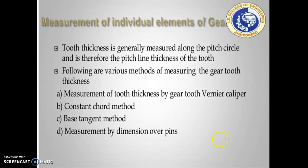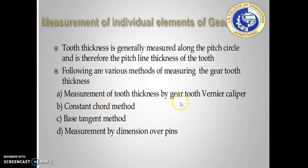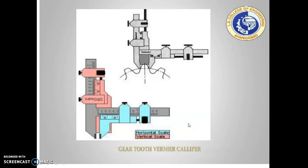Tooth thickness along the pitch circle — pitch line thickness of the tooth — can be measured by gear tooth vernier caliper. Other methods include the constant chord method, base tangent method, and measurement by dimensions over pins. The gear tooth vernier caliper consists of two vernier scales: one horizontal and one vertical.